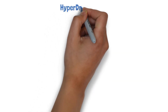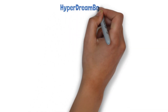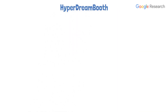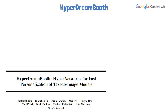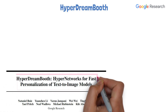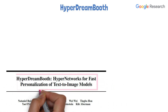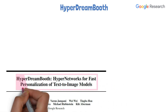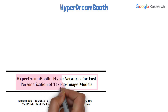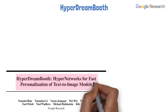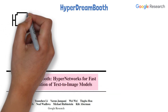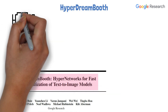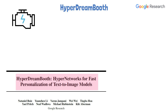Thank you for joining the CS Board video about HyperDreamBooth, a new research paper from Google Research titled HyperDreamBooth: Hyper Networks for Fast Personalization of Text-to-Image Models. As its title says, it lets you personalize text-to-image models.